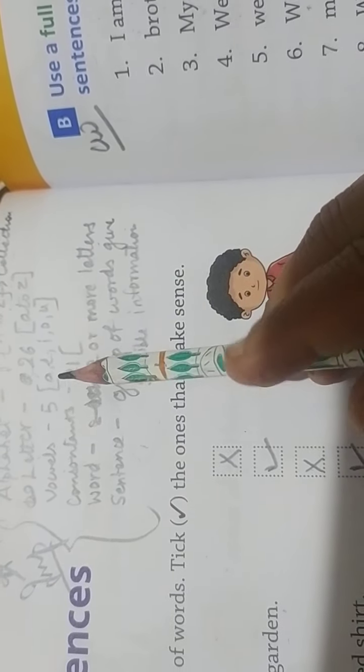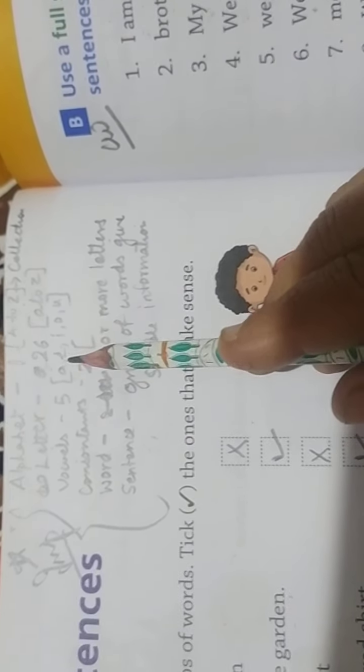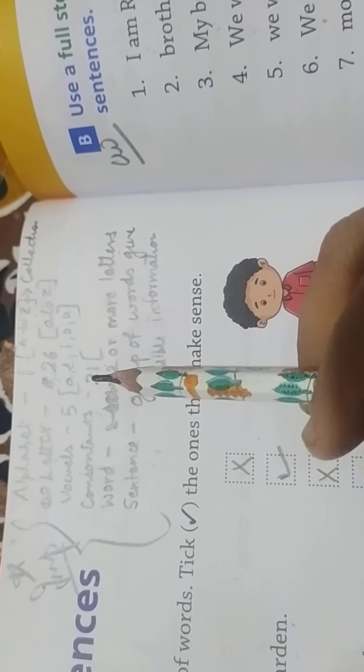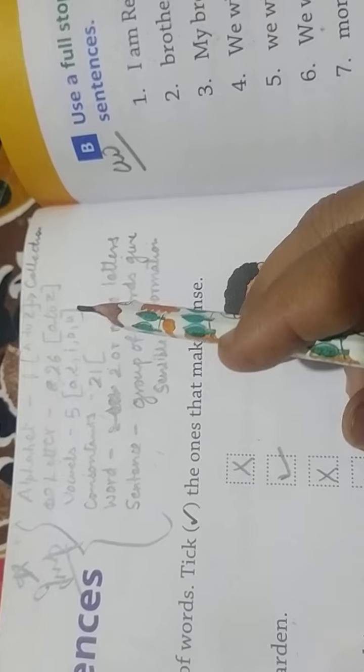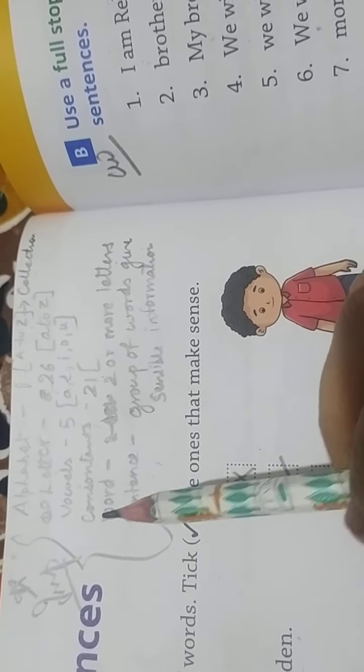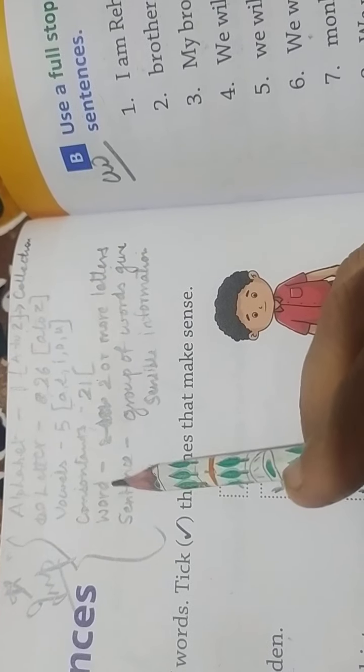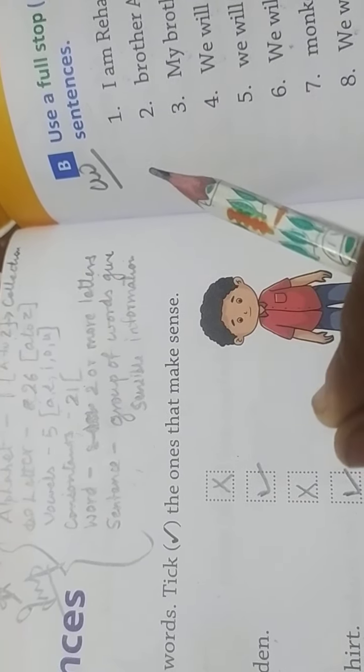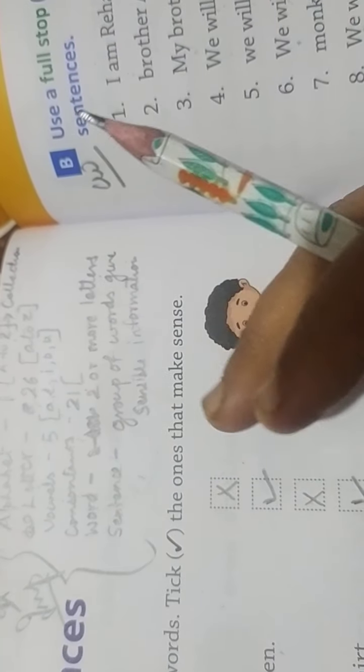We have A, E, I, O, U - five vowels. Consonants - how many consonants are there? Twenty-one, because A, E, I, O, U excluding, the rest are consonants. Word - what is a word? Two or more letters when they come together, we call it a word.